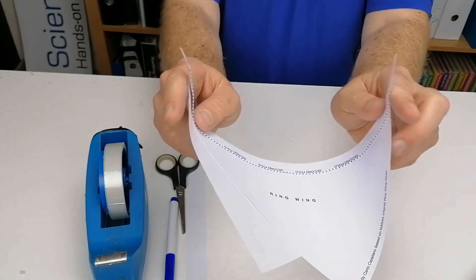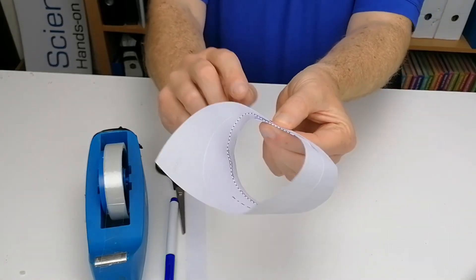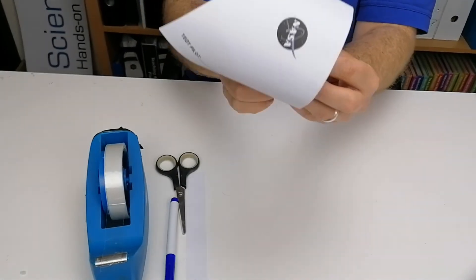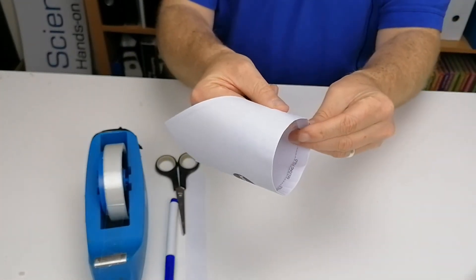And now what happens is you can put this side of the piece of paper into here. And then we're just going to sellotape that to keep it from coming apart.